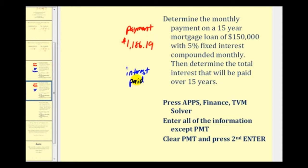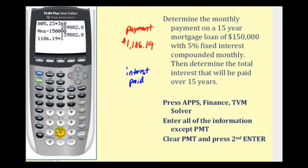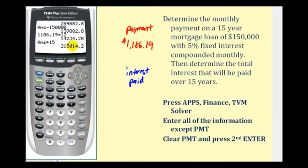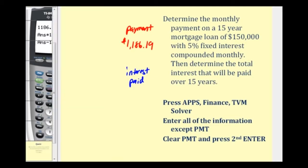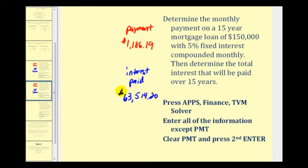To determine the total interest paid over 15 years, we'll take the monthly payment, multiply it by 12 for the number of payments per year, then multiply it by 15 for 15 years. This is the amount of money paid over the 15 years; minus the loan amount leaves us with the total interest paid. The amount of interest paid is $63,514.20. So for the 15-year mortgage, the monthly payment went up considerably, but the amount of interest paid also went down considerably. If you can afford the 15-year mortgage, you save yourself from paying a lot of extra interest.